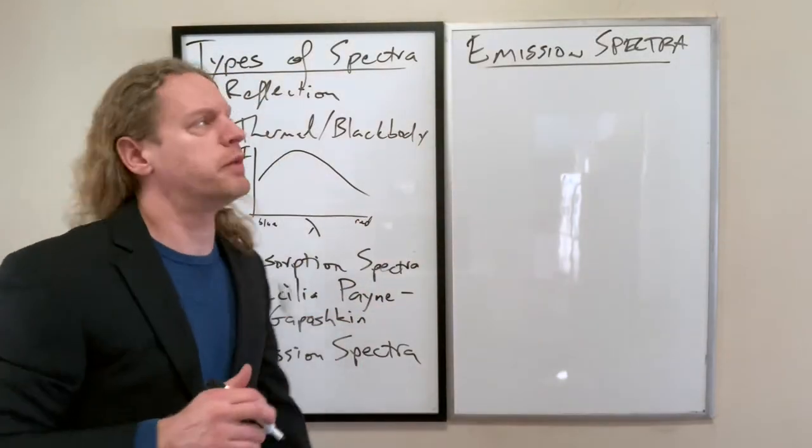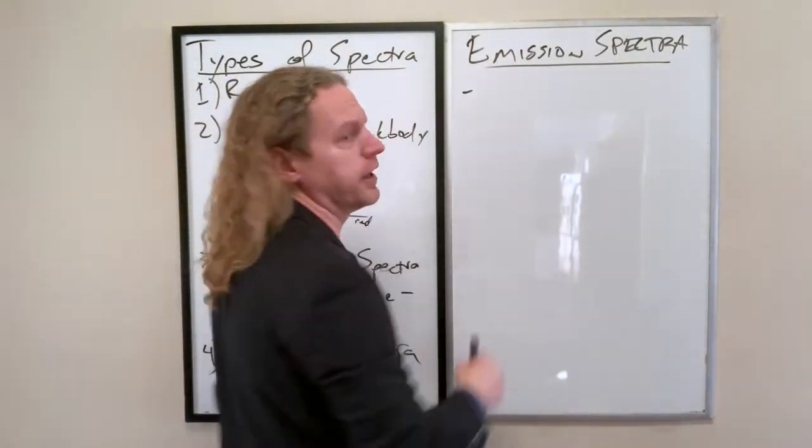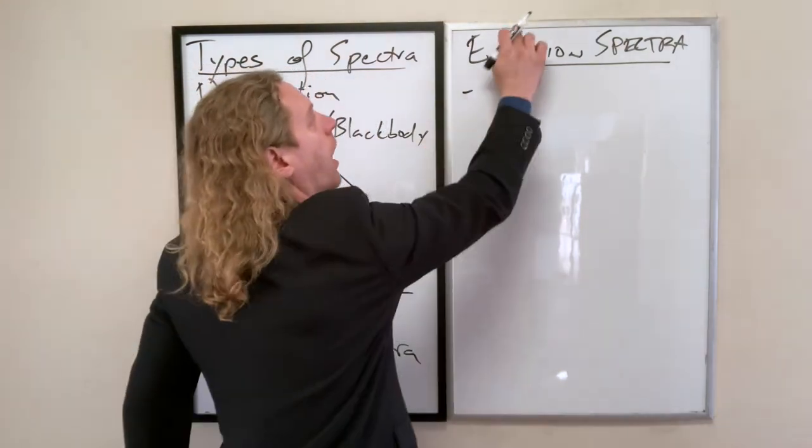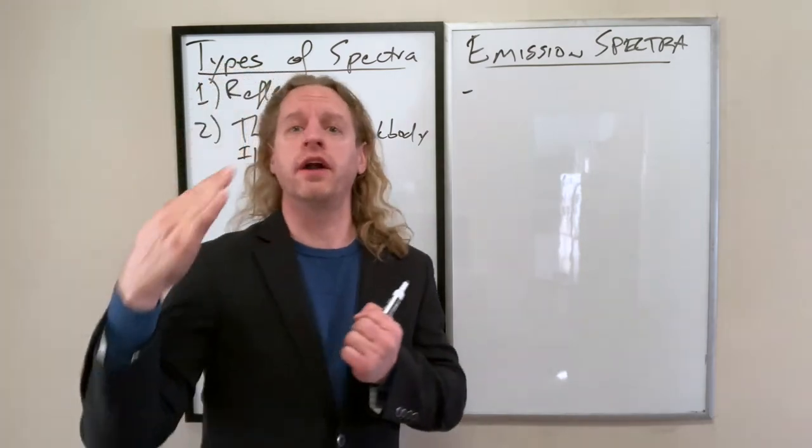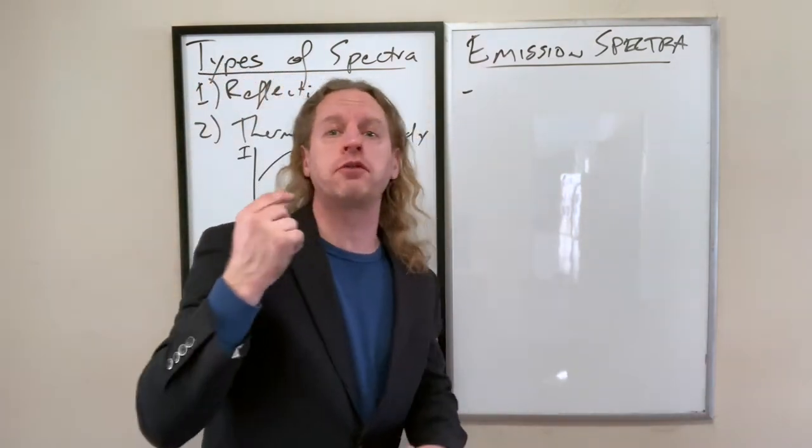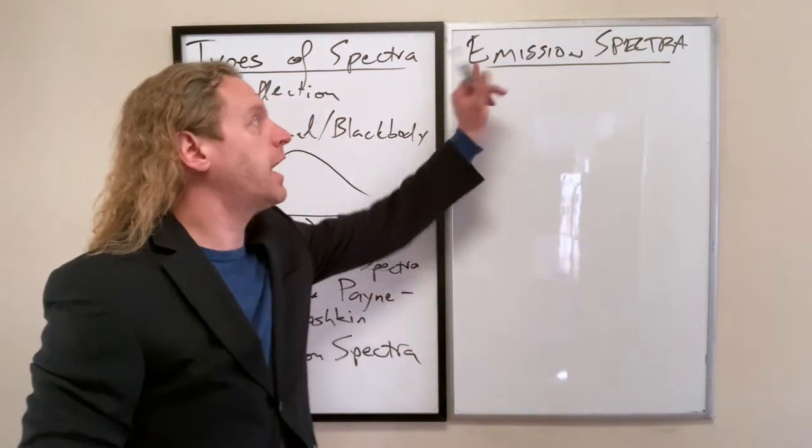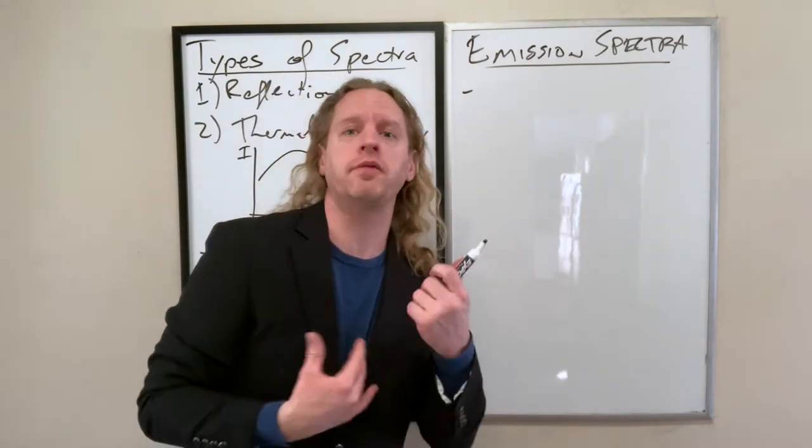To basically define what an emission spectrum is, first of all, and then we'll get into some examples here. Unlike an absorption spectrum, where in that case it's an otherwise continuous spectrum except for specific gaps, in the case of an emission spectrum, it's exactly the opposite.